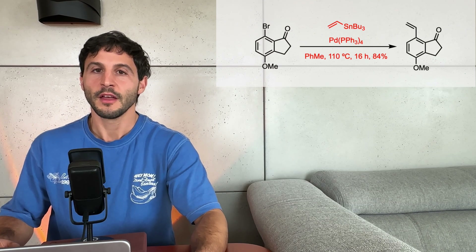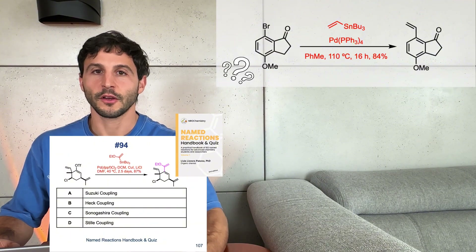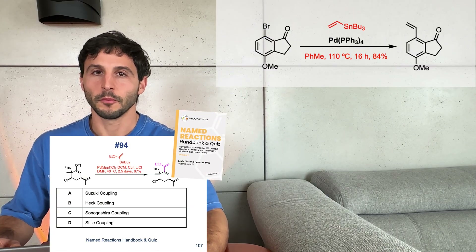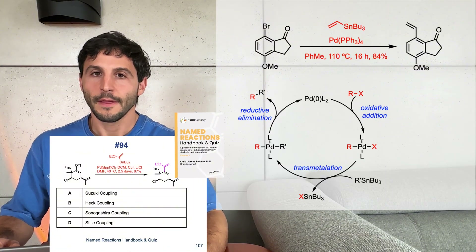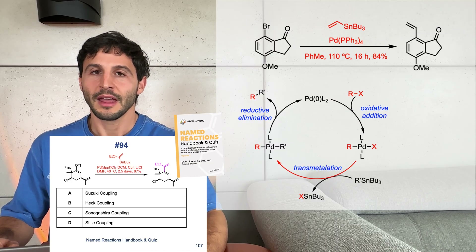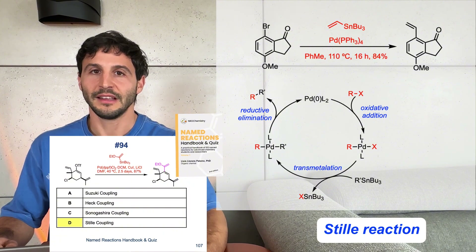The following step features a well-known name reaction. Do you know the name of this cross-coupling reaction? Here, the alkyl bromide reacts with vinyl tributyltin in the presence of a palladium catalyst. According to a simplified reaction mechanism, the catalytic cycle involves three steps: oxidative addition, transmetallation, and reductive elimination. This transformation is known as the Stille reaction.